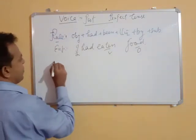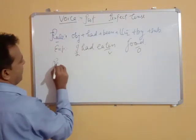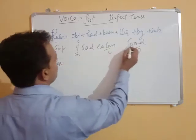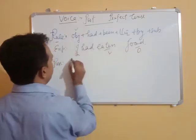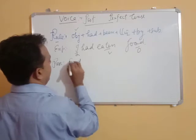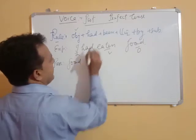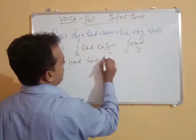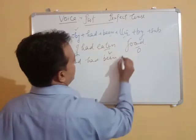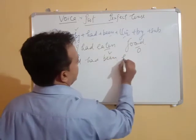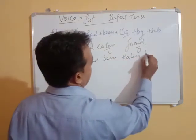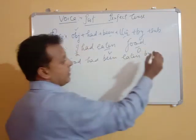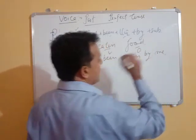And when we change it into passive voice, then we have to choose the object first — 'food.' Then: 'had been' — V3 is already there — 'eaten,' by the subject 'I,' which changes to 'me.' So the passive form becomes: 'Food had been eaten by me.'